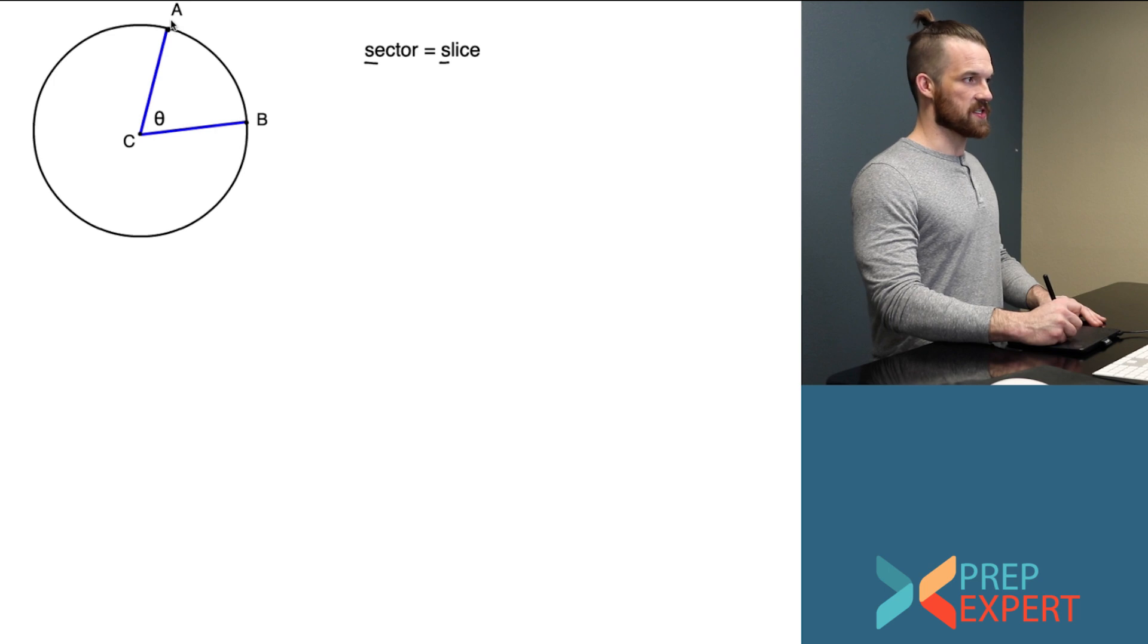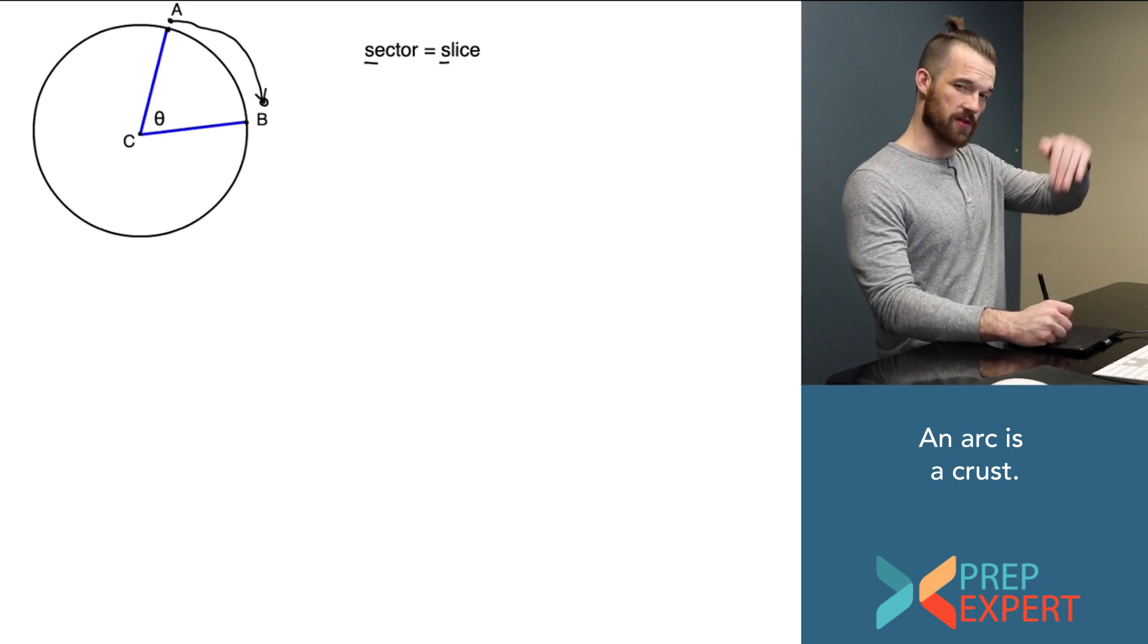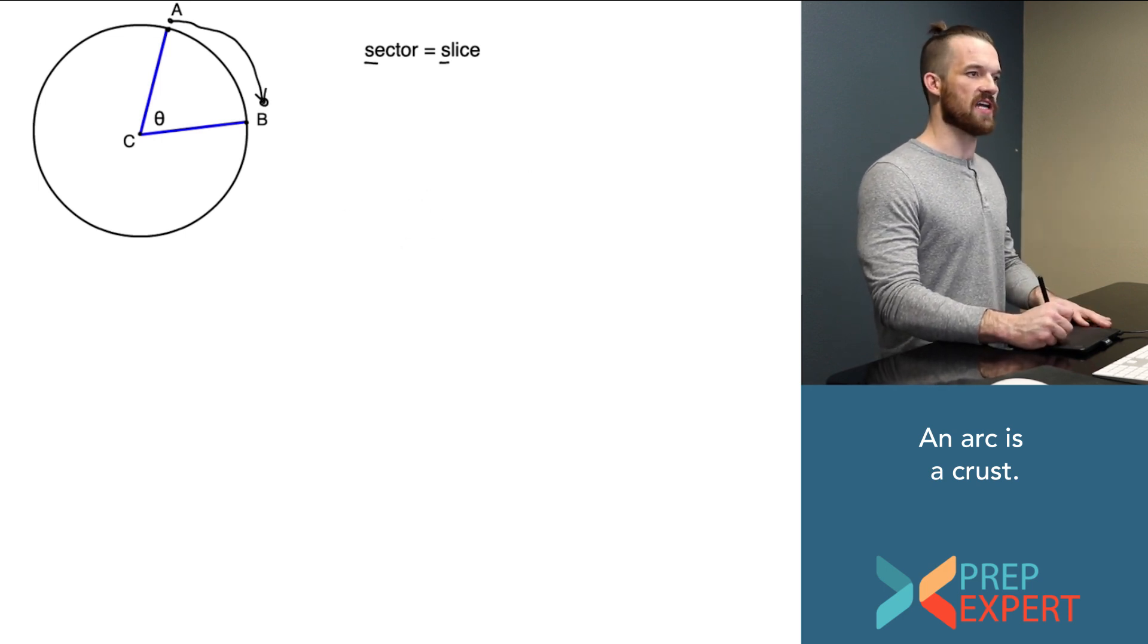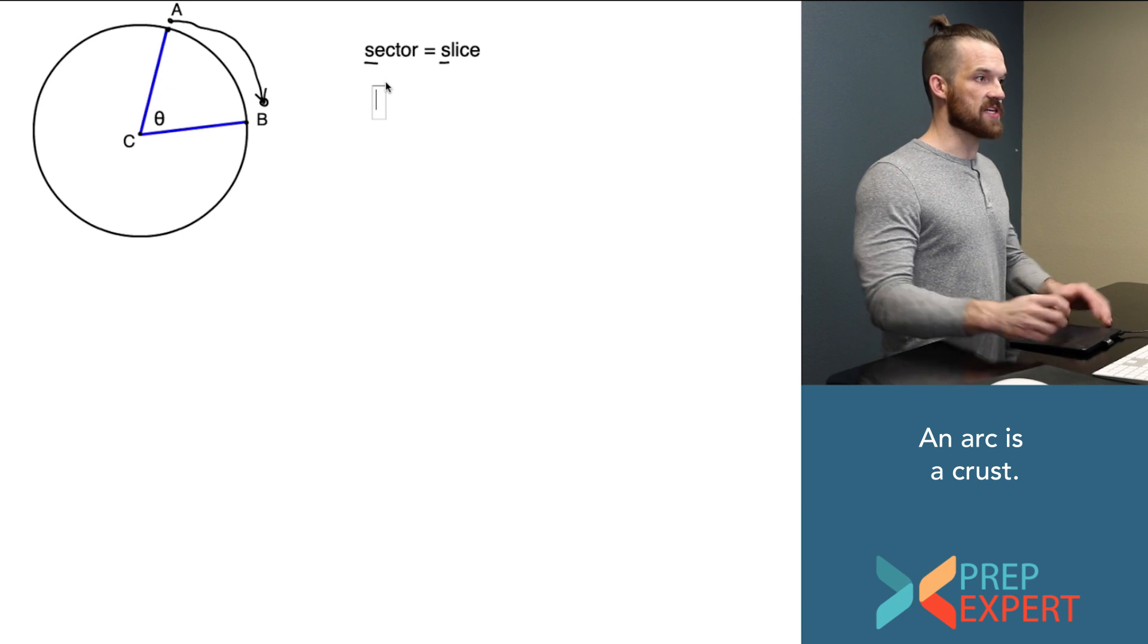We can also remember what an arc is this way. An arc is a distance around the circumference of a circle from one point to another. So from A to B, that distance around the circumference from A to B, we'd call that arc AB, which is usually denoted like this, a little curvy line over it.